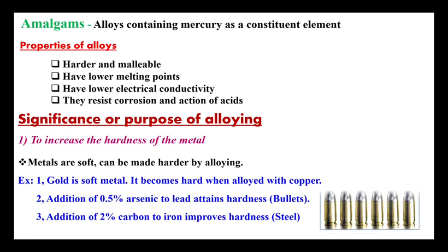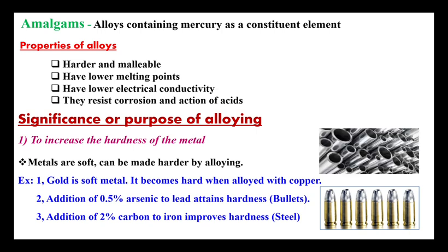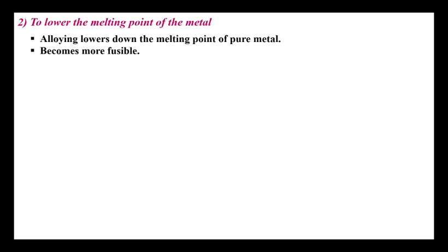Second, if we add 0.5 percent of arsenic to lead, it attains more hardness, and bullets are made using these types of alloys. Third, if we add 2 percent of carbon to iron, it improves the hardness and the material can also resist corrosion — this is called stainless steel. Likewise, we can increase the hardness of a metal by the process of alloying.